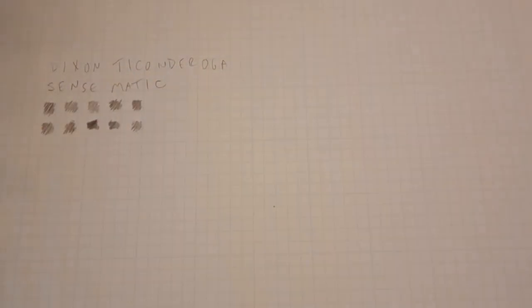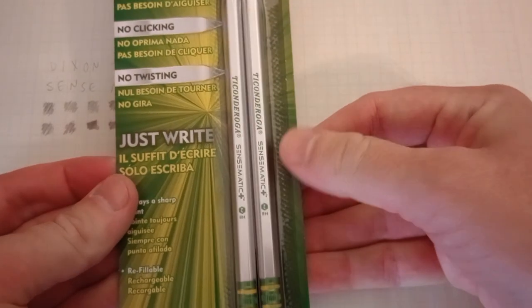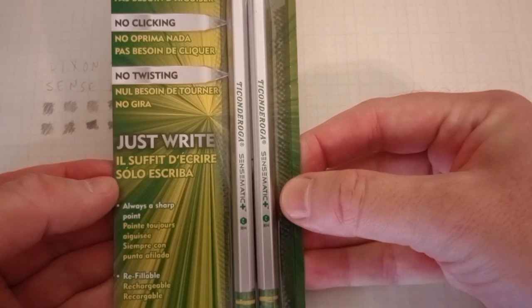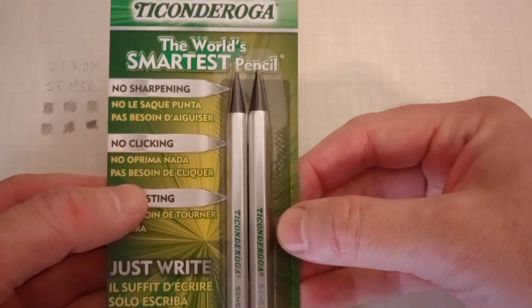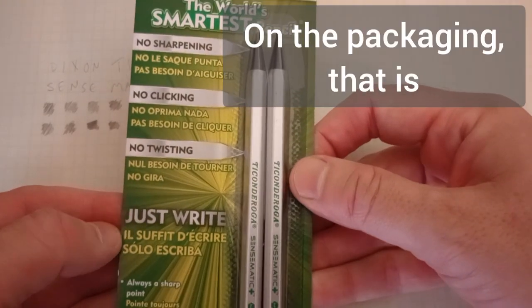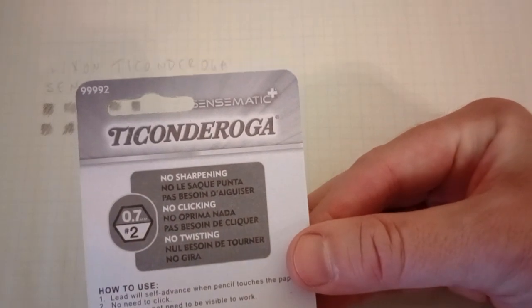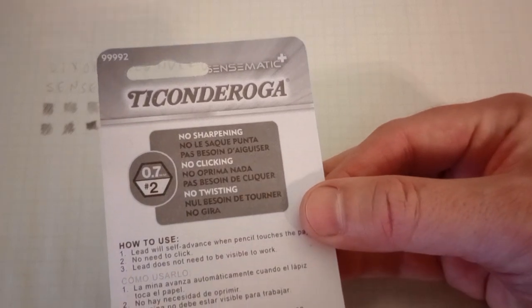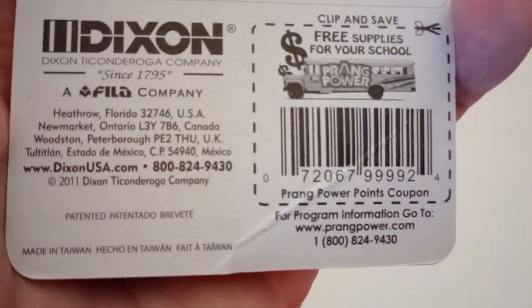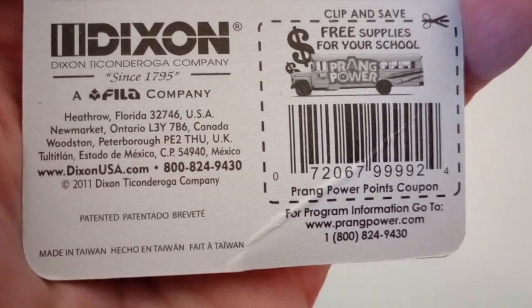So there are weaknesses to this design. That's the original. So they re-released then the Sensomatic. Although, I'm looking here. Now that I'm looking, I do not see the word Sensomatic here. So maybe this is no longer called that. It's simply called the world's smartest pencil. Still made in Taiwan. This has a 2011 date.